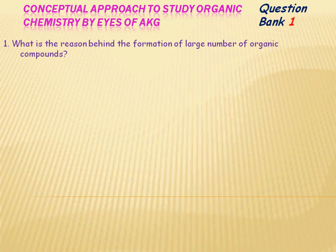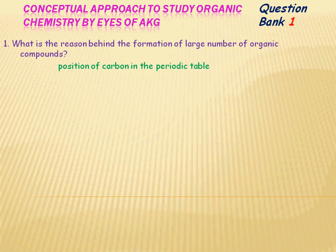students suggest catenation, size, electronegativity, and electron affinity. There are many answers given by students, but all these answers can be correlated only on the basis of size and position. So the correct answer is the position of carbon in the periodic table.